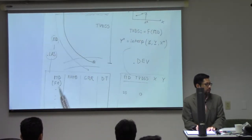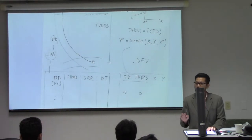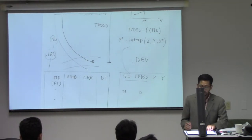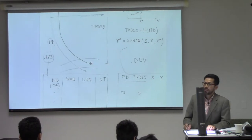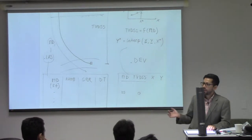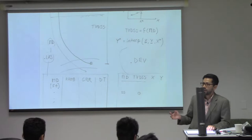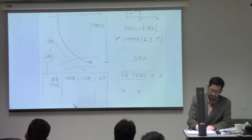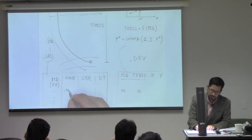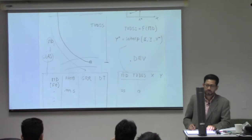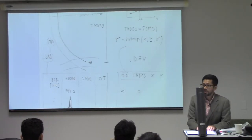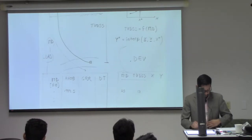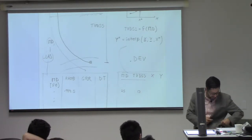So up to 25 meters, there is nothing — no reading, nothing. In many of these LAS files, zero may be a measured quantity and it may be a meaningful quantity. So when there is no reading in many of these files, you will find something like 999.5.